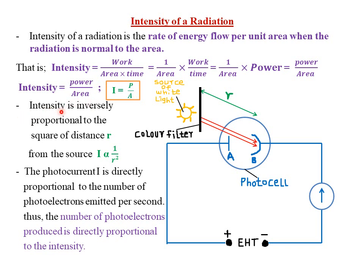The intensity of a given radiation is inversely proportional to the square of the distance r from the source. The shorter the distance r of the source from the photocell, the greater the intensity of the radiation. The longer the distance r, the smaller the intensity of that radiation.